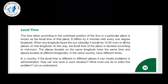The local time of a particular place is decided according to the position of the sun in the sky — that is, the mid noon. Places located on the same longitude have the same time, and places located on different longitudes in the same country have different times. Even within one country, if different states or districts fall on different longitudes, there will be time variations — a four minute difference per longitude.